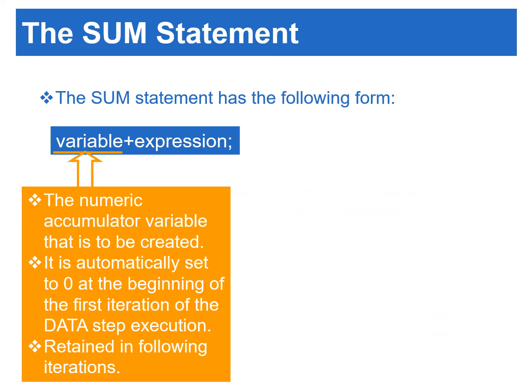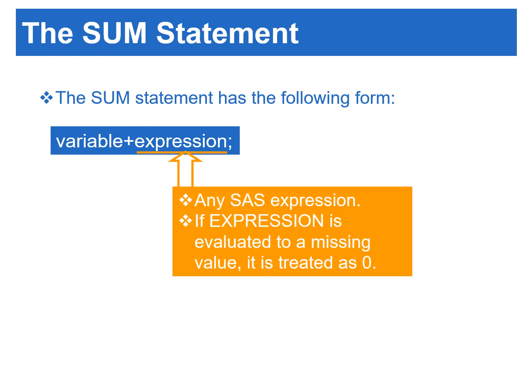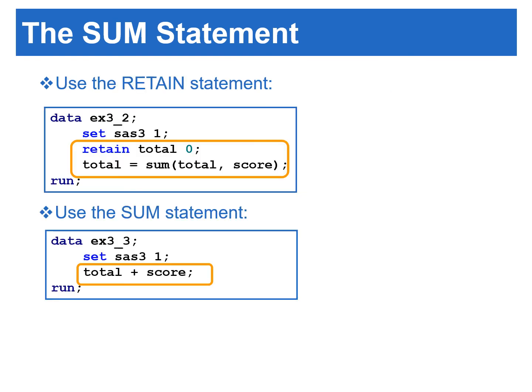The sum statement is similar to the retain statement. In the sum statement, variable is the numeric accumulator variable to be created. It is automatically set to zero at the beginning of the first iteration of the data step execution, and is thus retained in the following iterations. The expression after the plus operator can be any SAS expression. In a situation where the expression is evaluated to a missing value, it is treated as zero. Therefore, the previous program can be rewritten by using the sum statement instead of the retain statement. By using the sum statement, total is initialized to zero at the beginning of the data step execution, and total also retains its value at every iteration of the data step execution.